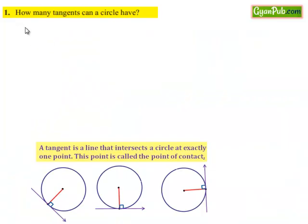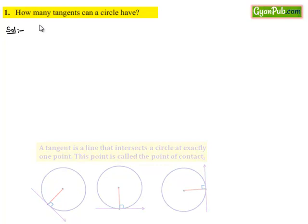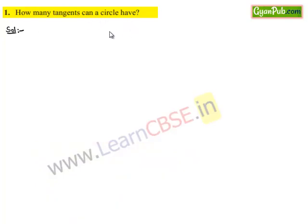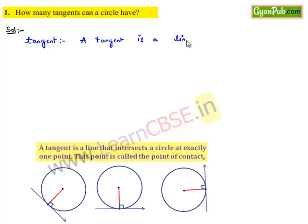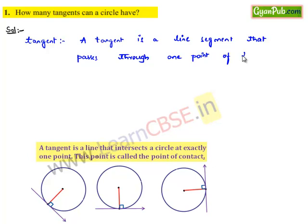Coming to the first problem of Exercise 10.1: how many tangents can a circle have? Moving to the solution, before going to that, let us know the definition of what is a tangent. A tangent is a line segment that passes through one point of the circle, and that point must lie on the circumference.